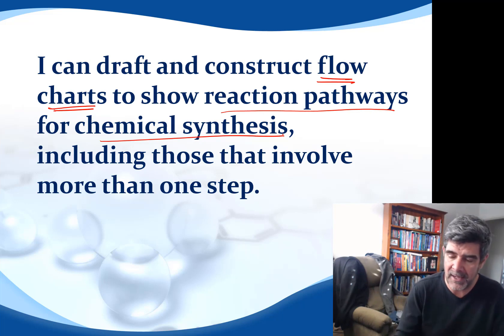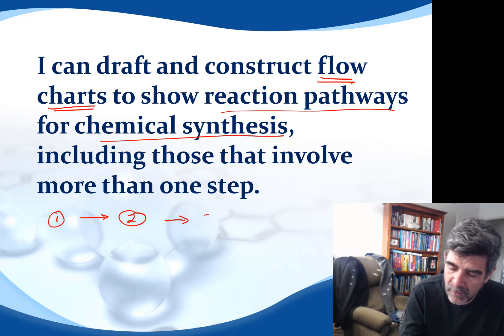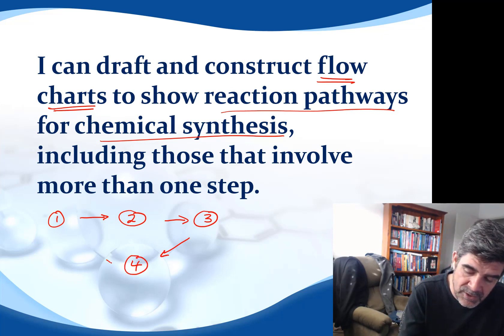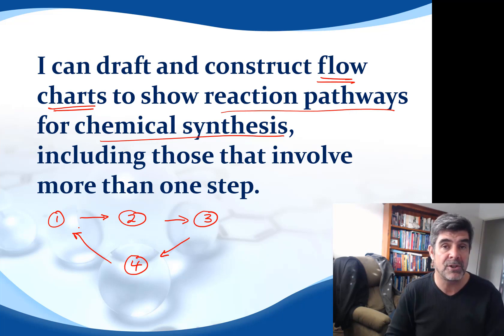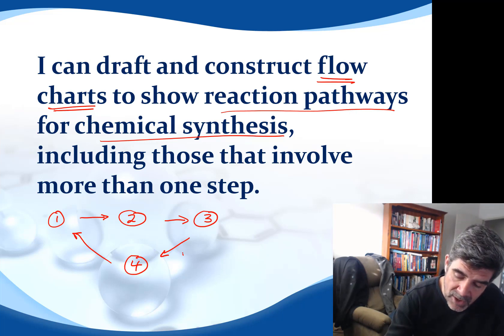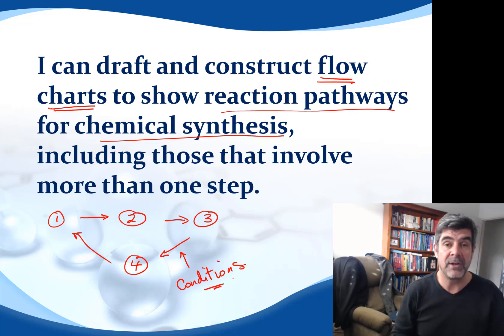There's a couple of important things to remember here. We need to be able to show how substance one is forming substance two, and potentially how substance two could form substance three. It may well be that substance three may form substance four, and through a certain process may even be able to return to substance one. Within each of these reactions there may be certain conditions associated with the reaction that we also want to try and identify.